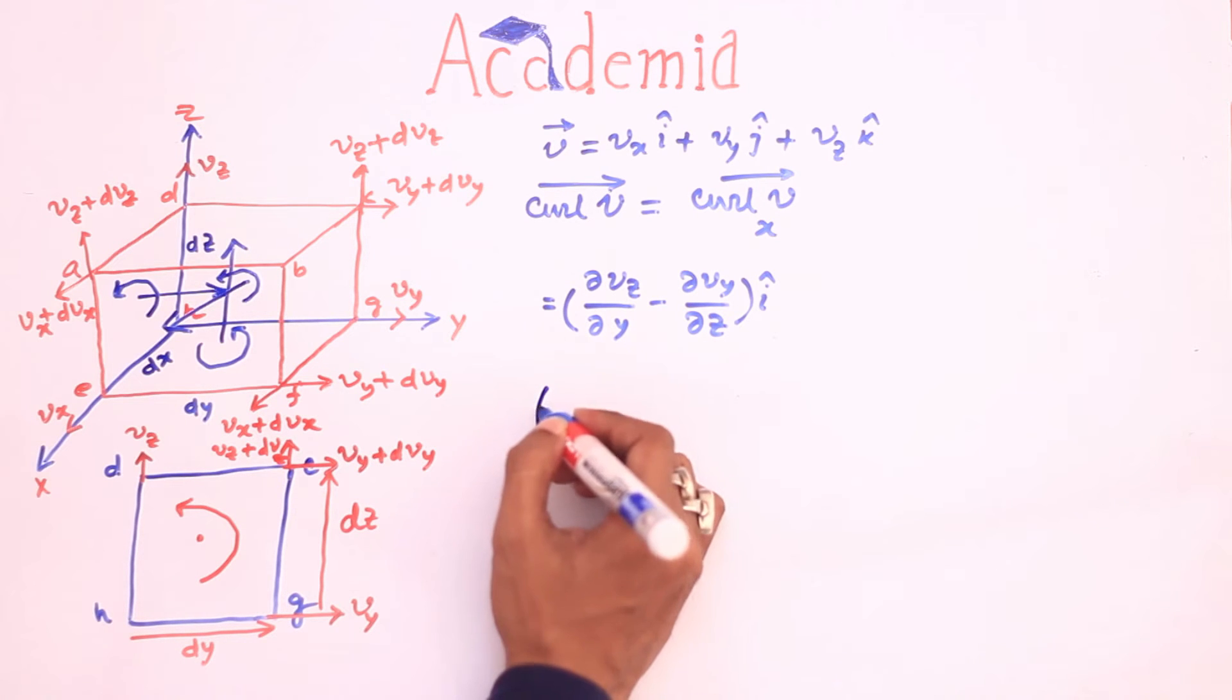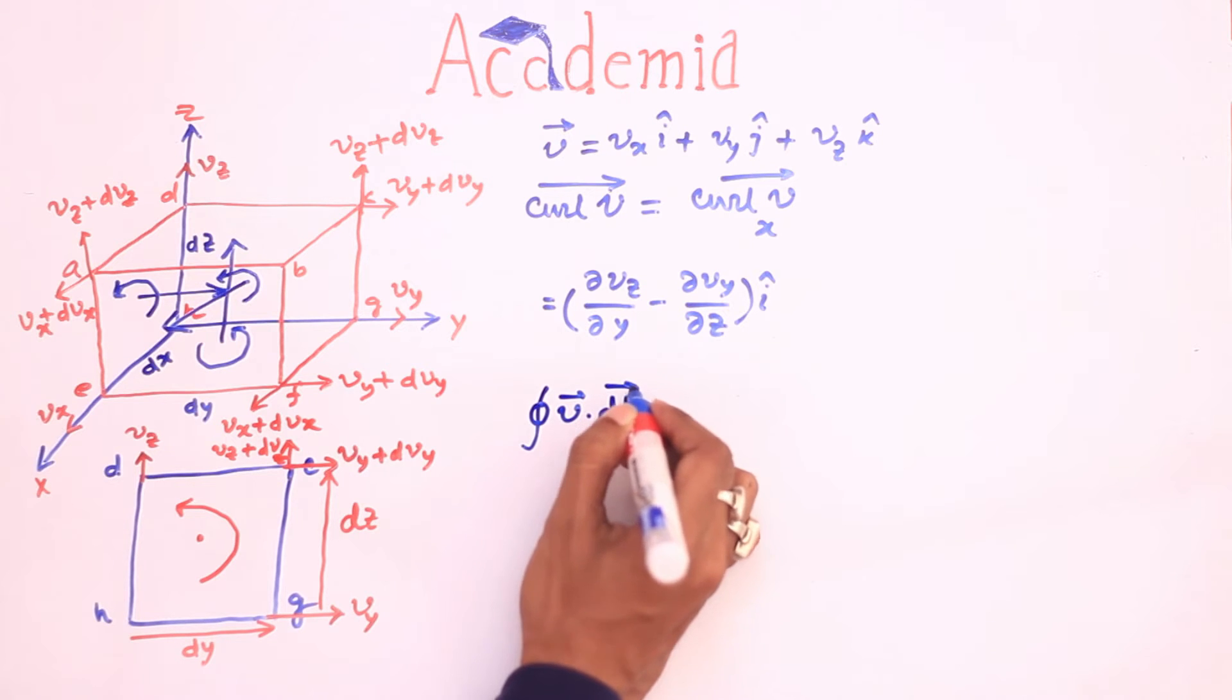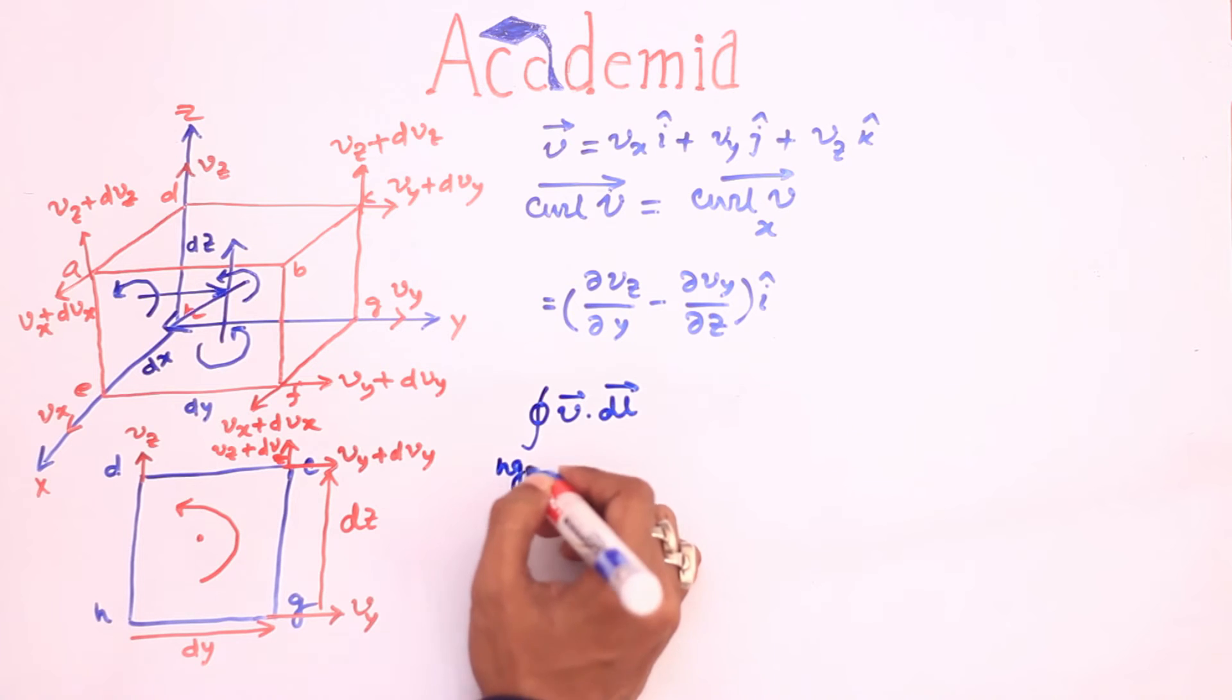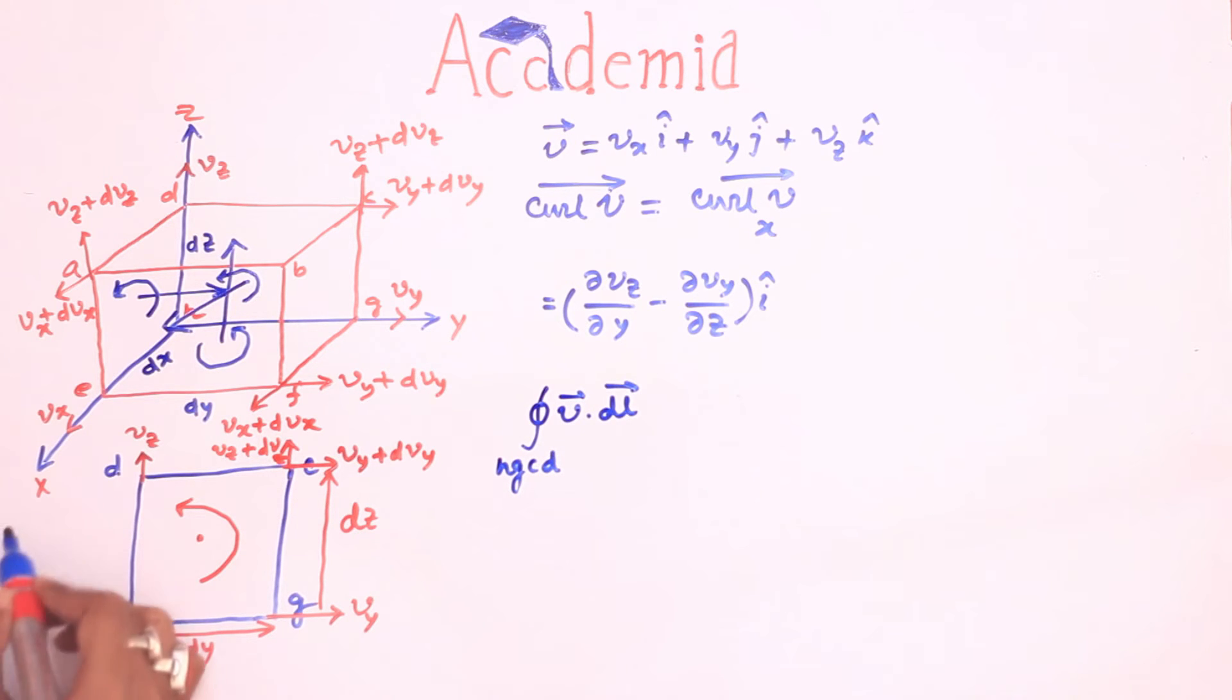Let's take the line integration of V around this closed contour Hgcd where Hg is positive dy, gc is positive dz.